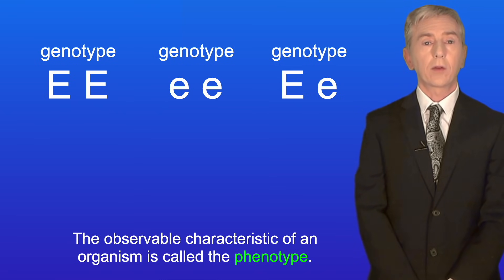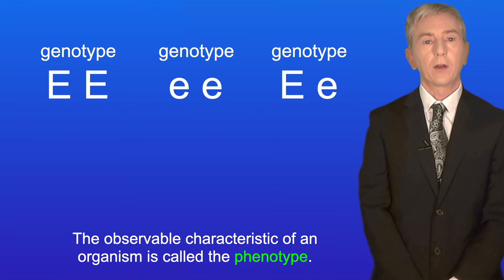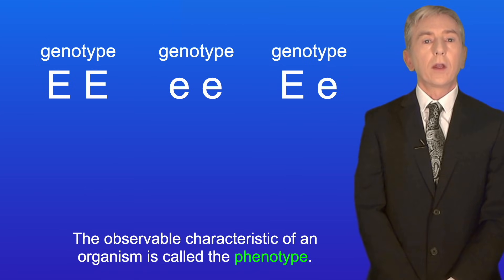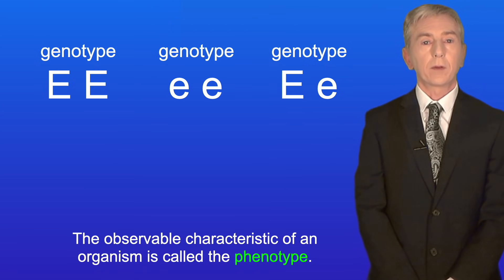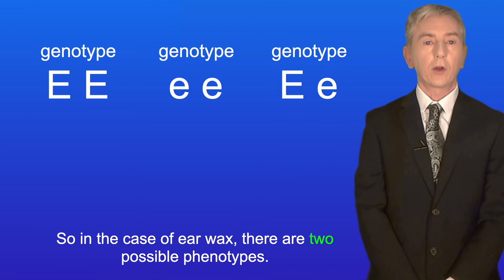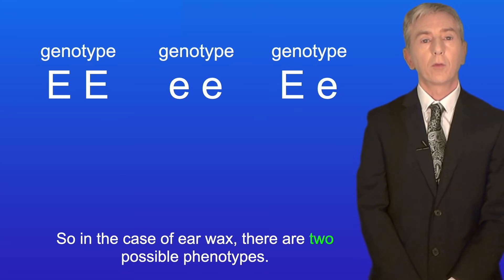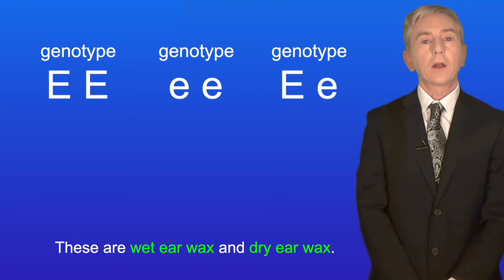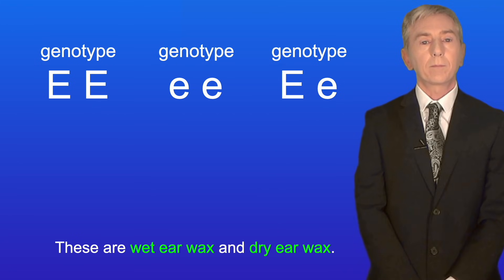The observable characteristic of an organism is called the phenotype. In the case of earwax there are two possible phenotypes: wet earwax and dry earwax.